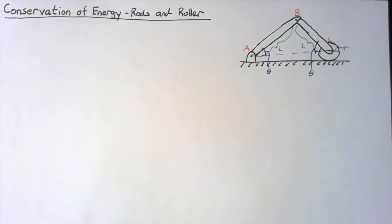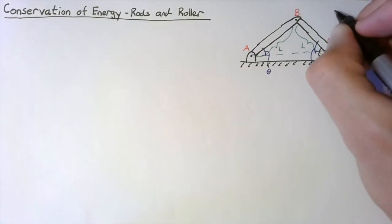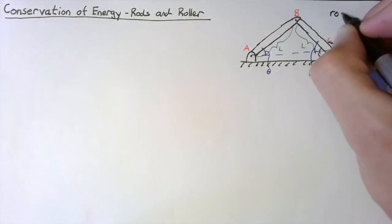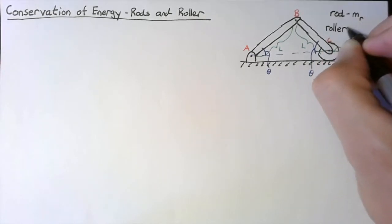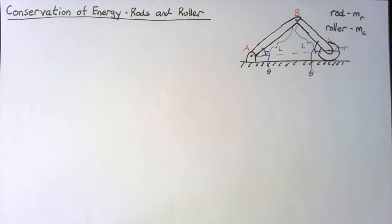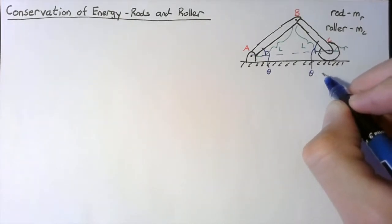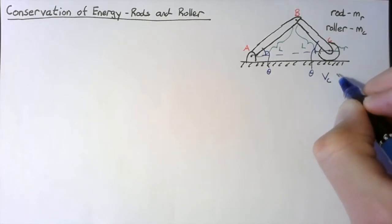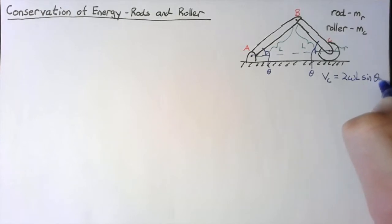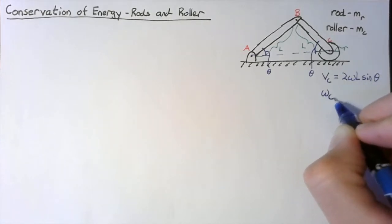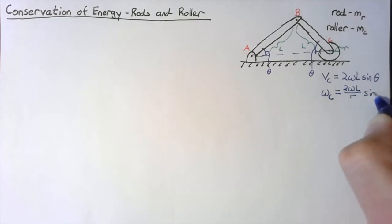Both of these are going to have some mass, since we're going to need that for the energy. The rods are going to have a mass mR, and the roller is going to have mass mC. We'll be using the results from our previous kinematics video. All we need are the velocity of point C, which was 2*omega*L*sin(theta), and the angular velocity of our roller, which was 2*omega*L/R*sin(theta).